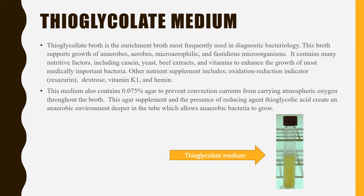The second most commonly used medium for anaerobic microorganism cultivation is thioglycolate medium. Thioglycolate broth is an enrichment broth most frequently used in diagnostic bacteriology. This broth supports the growth of anaerobes, aerobes, microaerophilic organisms, and some fastidious organisms as well. It contains many nutrient factors such as casein (a protein), yeast extract, and beef extract vitamins to enhance the growth of medically important bacteria.